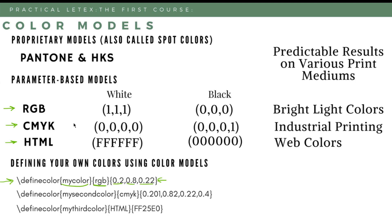If your LaTeX document will be printed, use the CMYK model, which is the industrial printing standard. CMYK uses cyan, magenta, yellow, and key (black) — four parameters. What you see on screen in CMYK is most likely what will be printed, but CMYK cannot produce colors as bright as RGB since RGB is light-based. If you are only creating documents for web pages, you can use RGB or HTML colors.